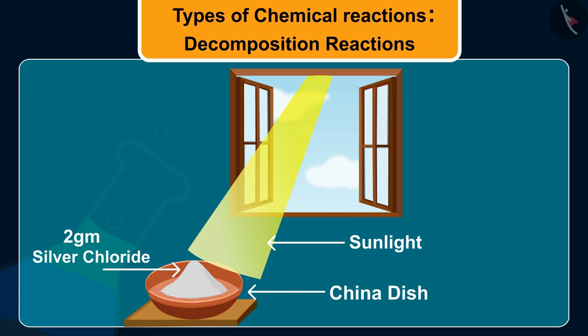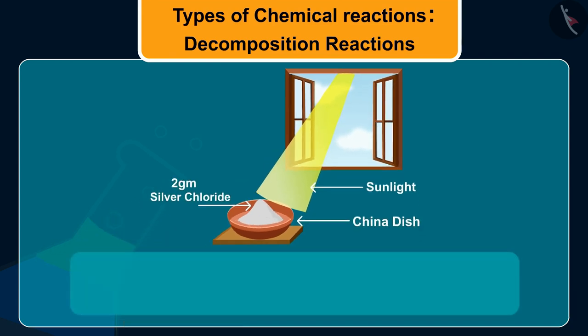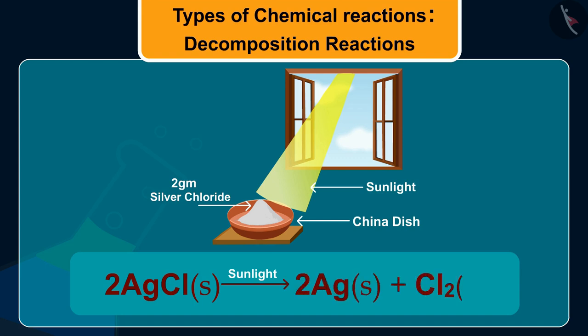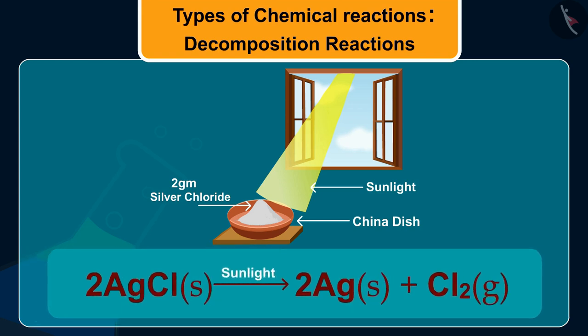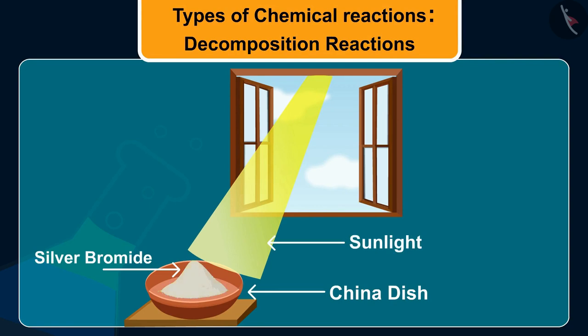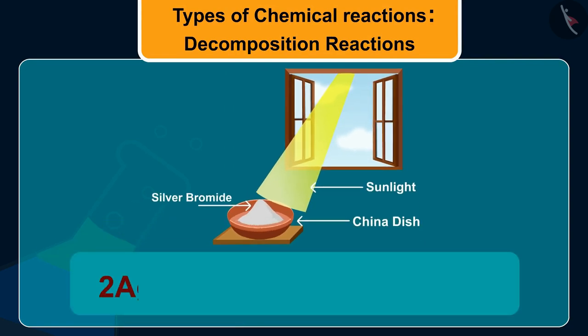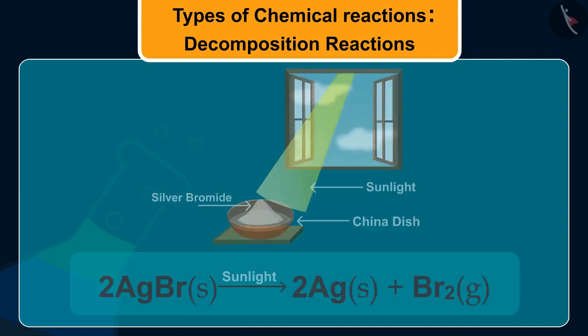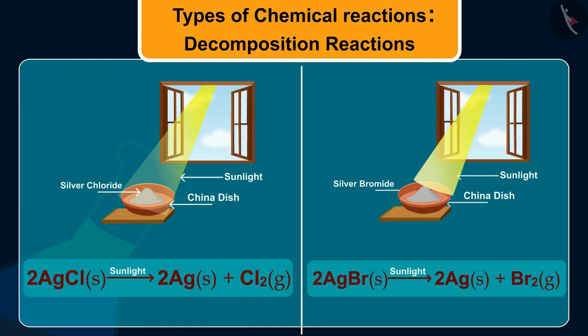The reaction for this is silver chloride on decomposition by sunlight breaks down to form silver and chlorine. Silver bromide also behaves in a similar way. The reaction shows that yellow colored silver bromide decomposes by the action of sunlight to give out silver and bromine. These reactions are used in black and white photography.